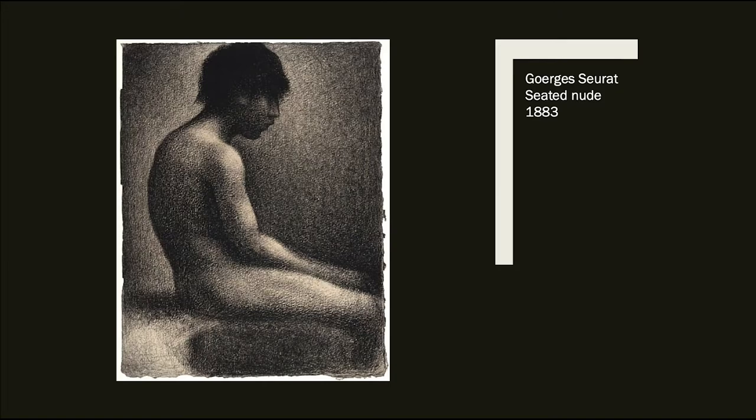This is an image by George Surratt from 1883. It's just a seated nude. And you can see how Monsieur Surratt is using tone to imply sources of light and their complementary shadows.